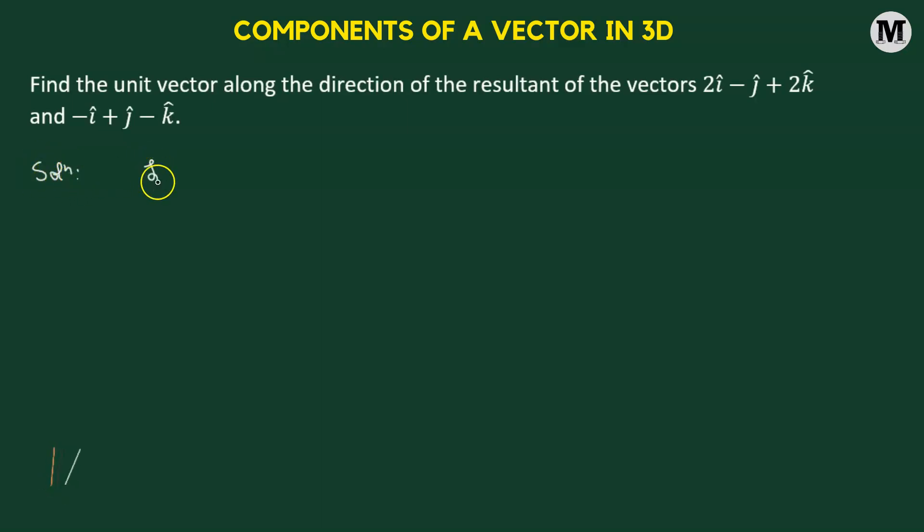So first what we'll do, we're going to name the two vectors as vector a and vector b. So let's represent vector a with 2i cap minus j cap plus 2k cap. And we're going to represent vector b as negative i cap plus j cap minus k cap.